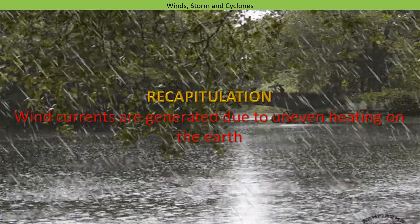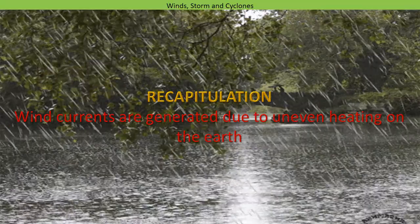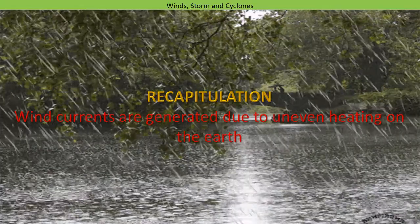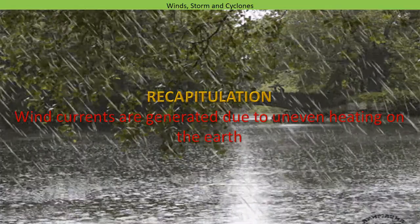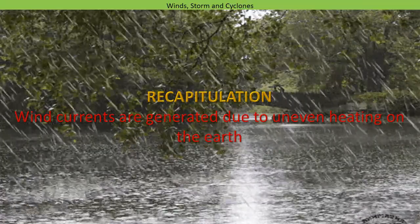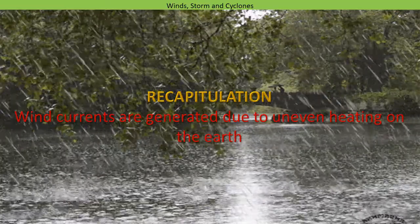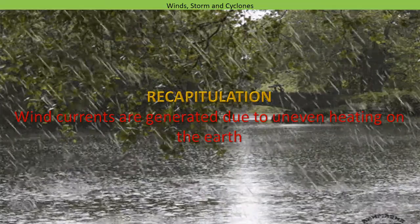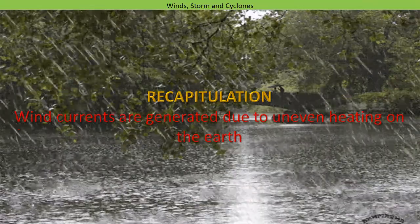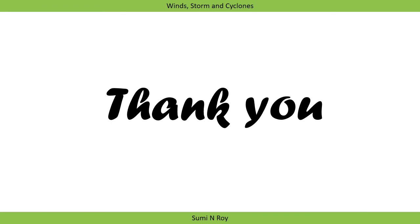I hope you all have understood how wind is produced due to uneven heating of the earth by the sun. In our next class, we will discuss how cyclones, tornadoes, and thunderstorms are formed. We will also discuss precautions to be taken during a thunderstorm, the destruction caused by cyclones, and advanced technology that has helped in protection from cyclones. Thank you for joining the class.